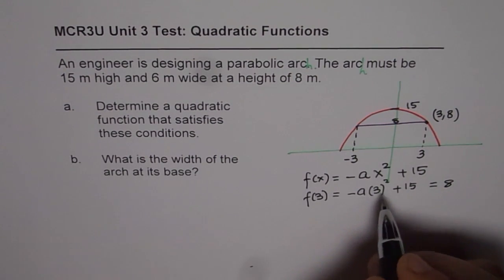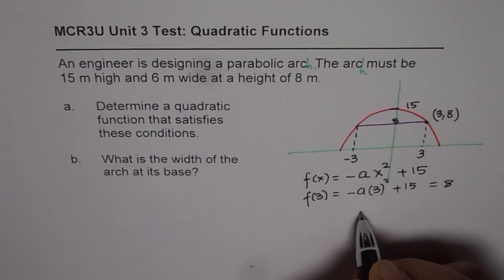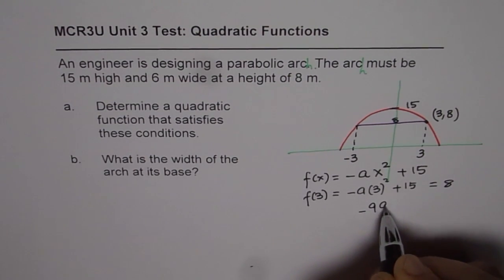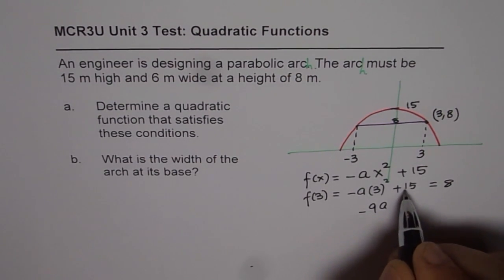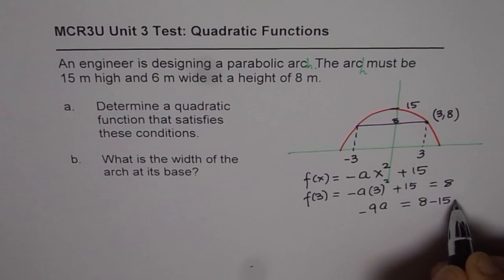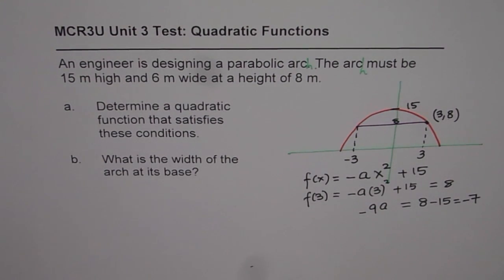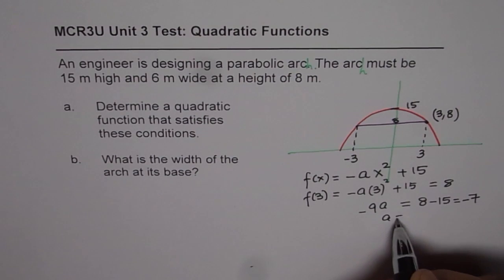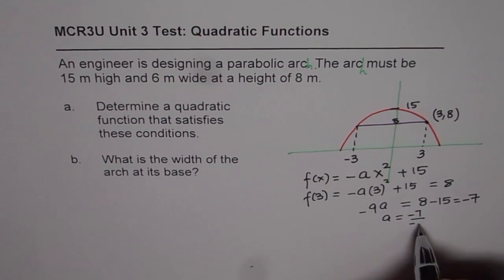So let us open this up. It is 9, so it is -9a equals to, let's take 15 to the other side, 8 - 15 which is equal to -7. And therefore, a equals to -7 over -9, or 7 over 9. So that is the a value.